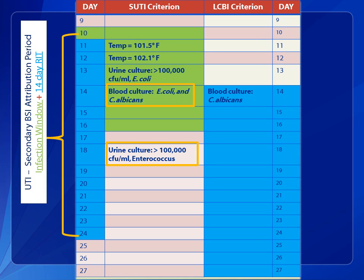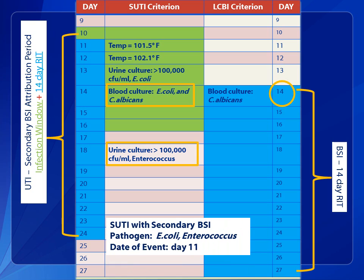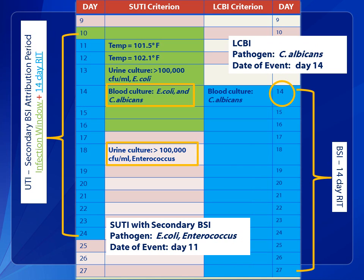If another site-specific infection is not identified for which the BSI can be secondary, then the BSI meets criteria for a primary LCBI. Note the date of event for the primary BSI is hospital day 14, which is also the date of the positive blood culture. This is day 1 of the 14-day RIT for the primary BSI — during this time frame, no new primary BSI is reported. The final determination is a SUTI with a secondary BSI, pathogens E. coli and Enterococcus, date of event hospital day 11. Additionally, an LCBI has been identified with pathogen C. albicans and date of event day 14.